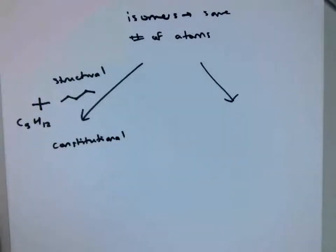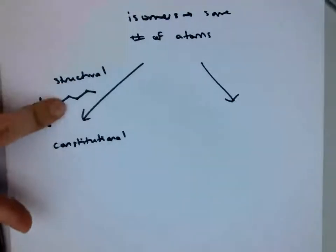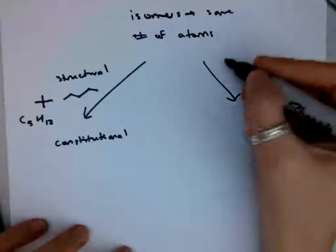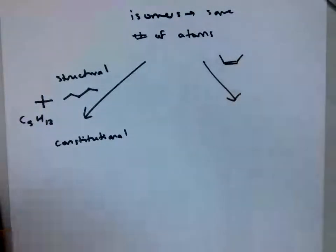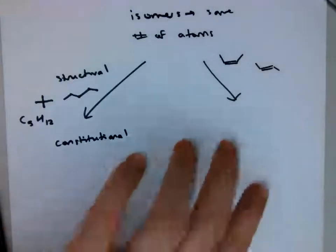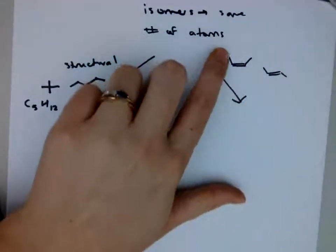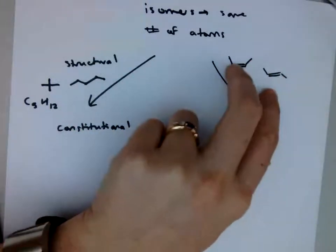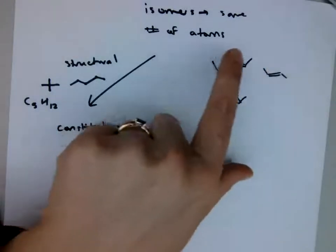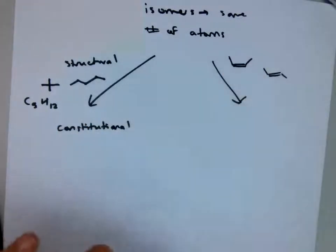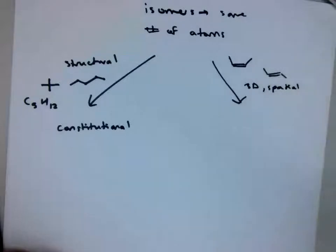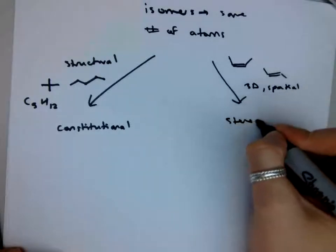And then there's spatial. So these are going to be isomers. They have the same number of atoms, and they're actually structured the same way, but they're arranged differently in space. An example of this is the connectivity of these two structures are the same. If you drew this out, it would be CH3, CH, CH, CH3, either way. Their 3D arrangement, or their spatial arrangement, is different. These are going to be called stereoisomers.